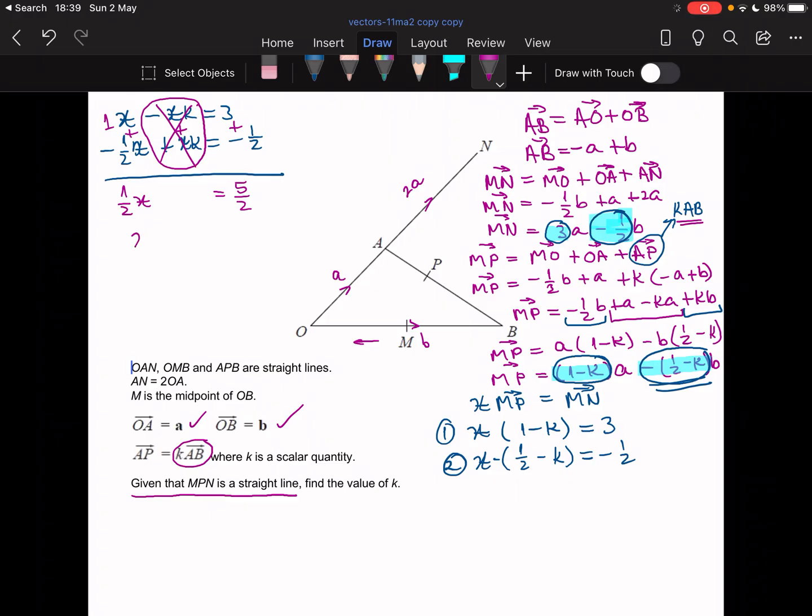So I'm going to end up having to divide. So I'm dividing by a half. So 5 over 2 divided by a half, which is the same as multiplying by 2. So that's 5 over 2 times 2. We can cross these out. So we get an answer of x equals 5.